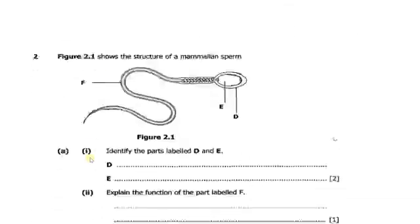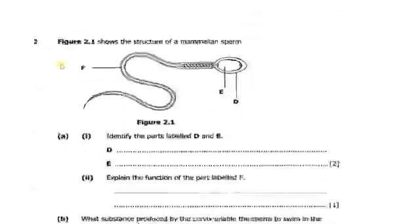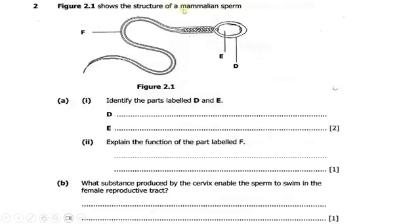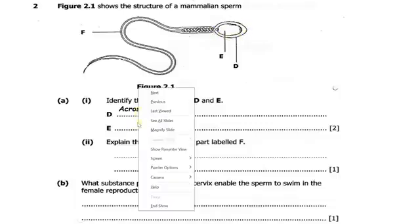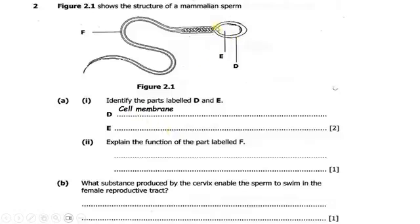Now we move to question two. Figure 2.1 shows the structure of a mammalian sperm. Part A, number 1: identify the parts labeled D and E. Part D is the cell membrane. Part E is the nucleus.